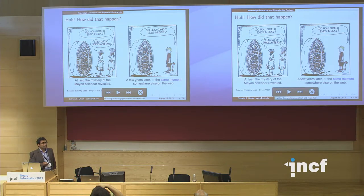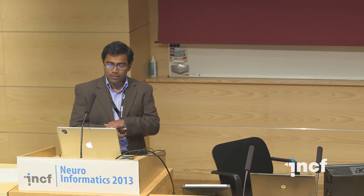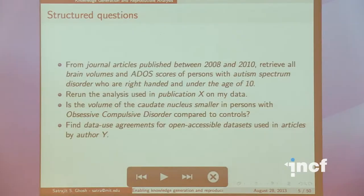Many of us find ourselves in Calvin's footsteps — we look at something in the scientific literature and we have no idea where it came from. So the Mayan calendar — apparently they just ran out of space on the rock, that's why it stopped at 2012. The apocalypse came and went. But we find the same thing in the context of scientific information. Getting at information as to why we see a result would help us answer many of these questions.